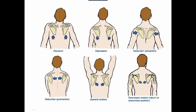We have elevation and depression of the scapula — kind of a shrug. We have ADduction of the scapula, which is sticking your chest out and taking those medial borders of the scapula closer to the spinous processes. And we have ABduction or protraction of the scapula, which is taking those medial borders away from the spinous processes — rounding your shoulders, like when you're texting or on your computer.